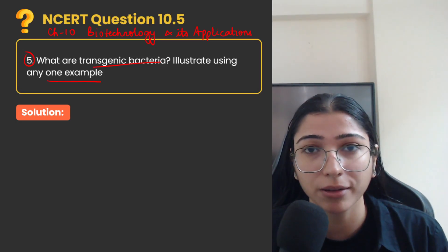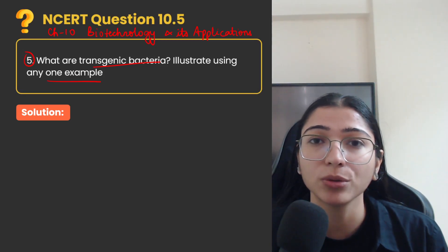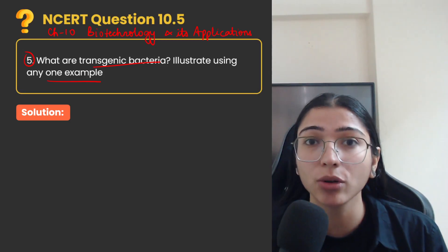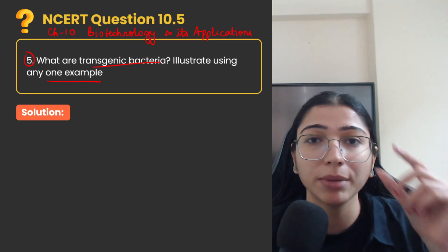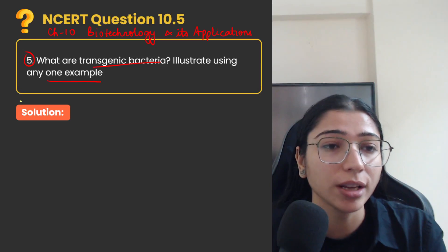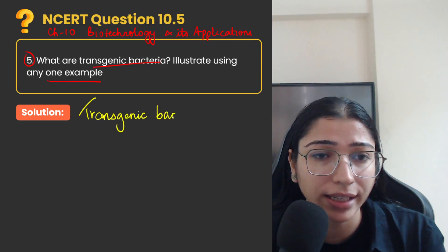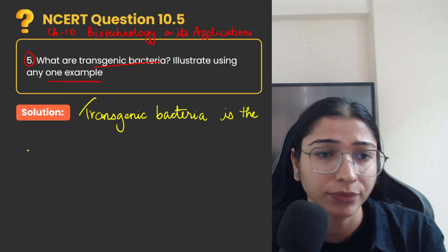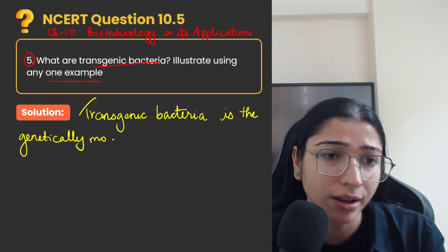This is a best example which we have used, that is the use of E. coli bacteria in producing human insulin. So we introduced some genes in E. coli to make human protein, that is insulin. Let's write the solution: transgenic bacteria.